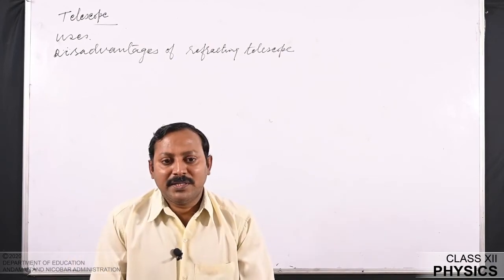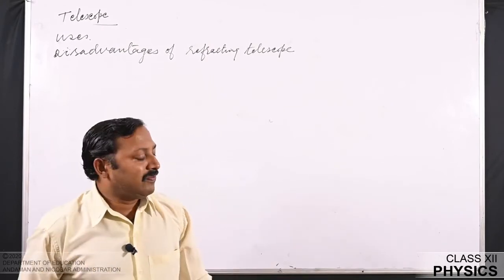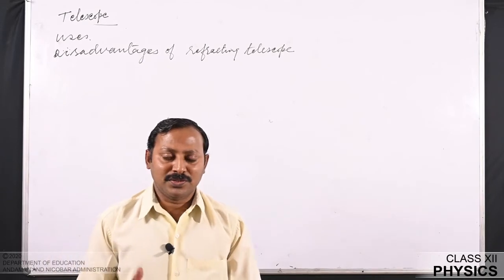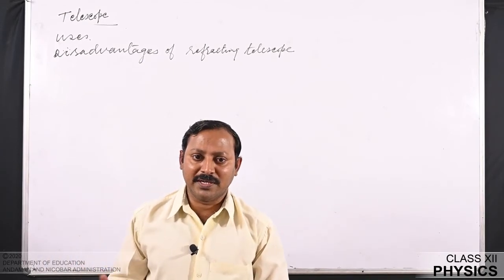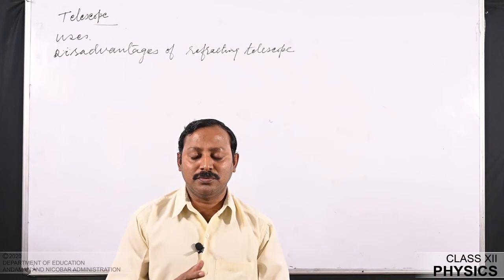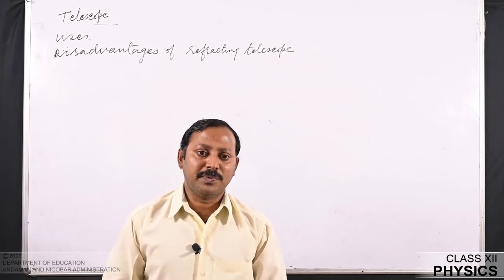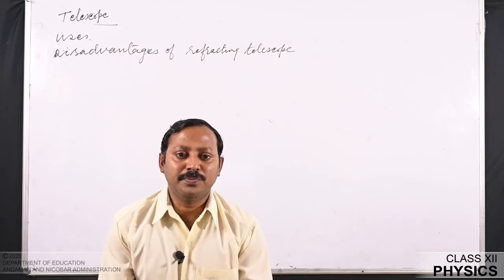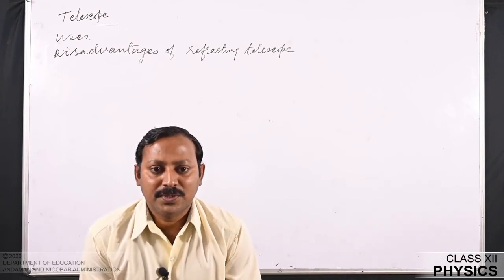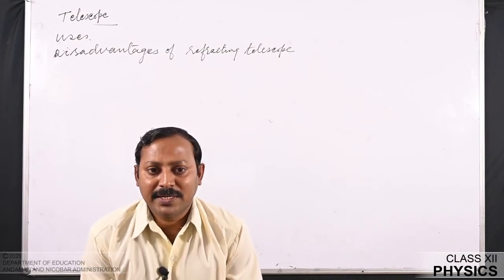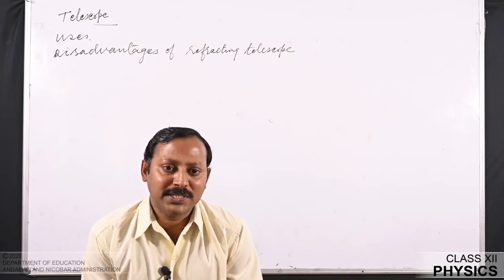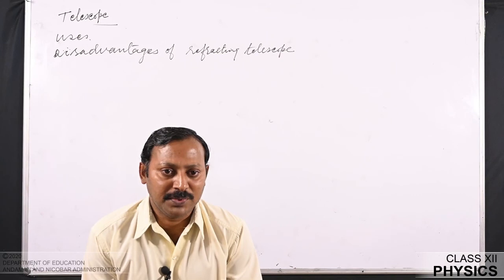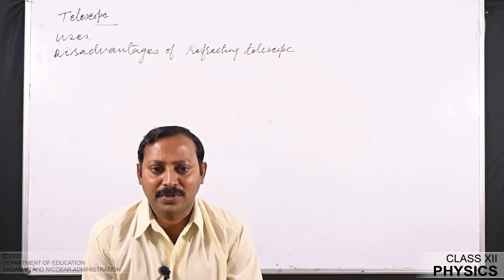After seeing the disadvantages of a refracting telescope, it is clear that there are many issues. To overcome these, reflecting type telescopes were devised, which use a mirror system. We will see the reflecting type of telescopes and the advantages of reflecting telescopes in our next class. Till then, I hope all of you will practice and do your level best.